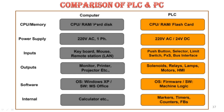For memory, PLC doesn't use a hard disk like a computer does. For power supply, computers run on AC supply while PLCs normally work on 24V DC. Inputs for a computer are keyboard and mouse, while for PLCs they are sensors, push-buttons, selector switches, and limit switches.